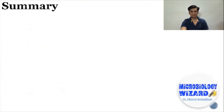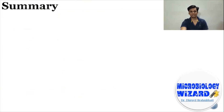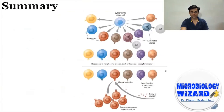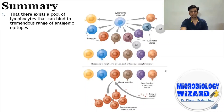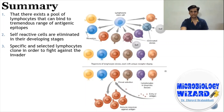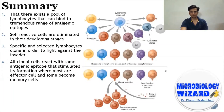To summarize, there are four tenets to the Clonal Selection Theory. First, there exists a pool of lymphocytes that can bind to a tremendous range of antigenic epitopes. Second, self-reactive cells are eliminated in their developing stages. Third, specific and selective lymphocytes clone in order to fight against the invader. Fourth, all clonal cells react with the same antigenic epitope that stimulated their formation, where most are effector cells and some become memory cells for a better response on reoccurrence of the same antigen.